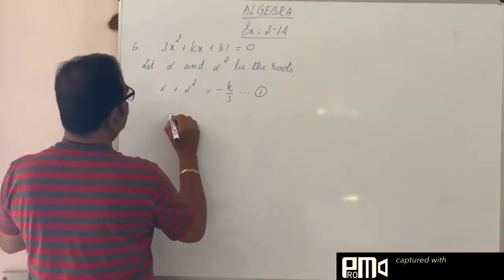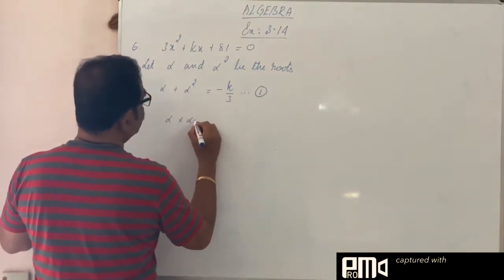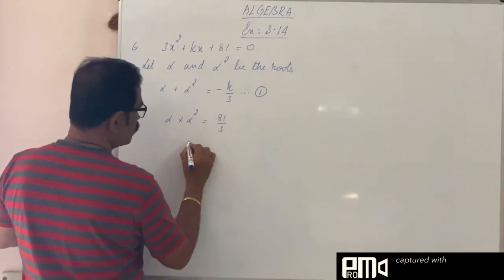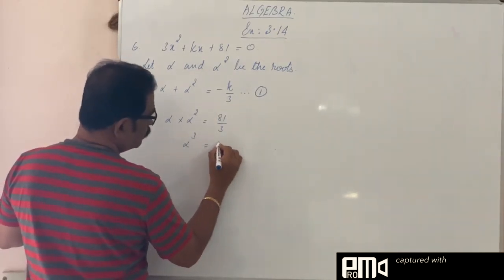Now, product of the roots, alpha into alpha square equals 81 by 3. So this is alpha cube, 27.